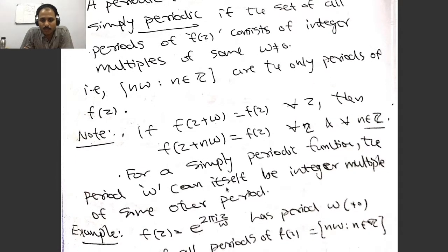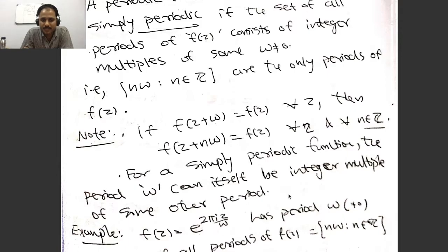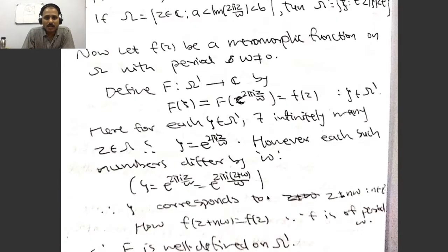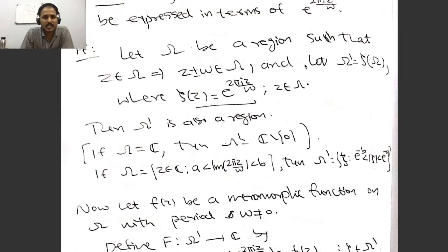An example of a simply periodic function with period omega not equal to zero is given by f(z) = exp(2πiz/ω). If you consider this function, the set of all periods of f(z) consists simply of integer multiples of omega. We are going to see first that any function with period omega can be expressed in terms of this exponential function.